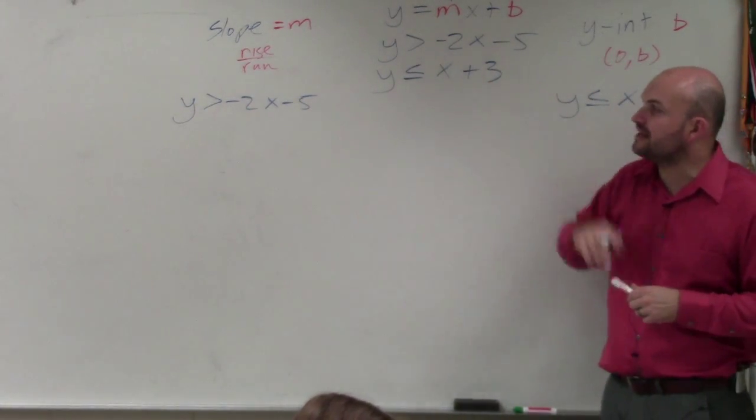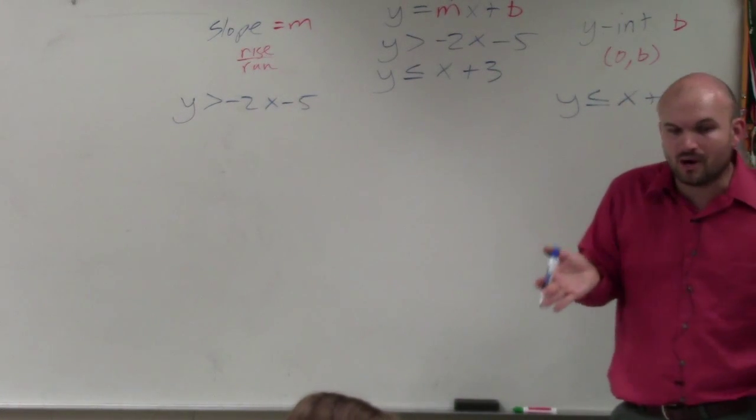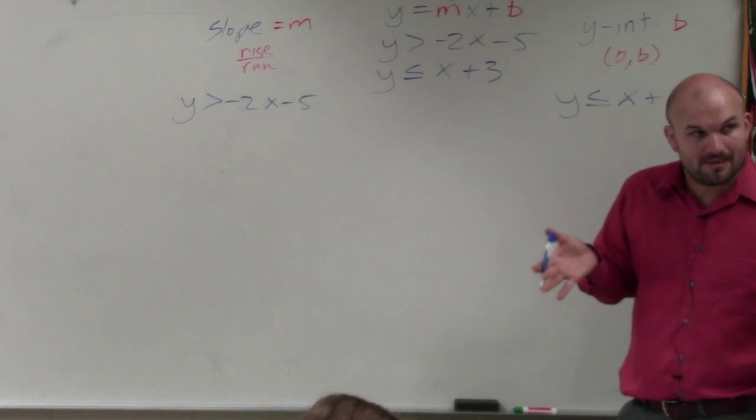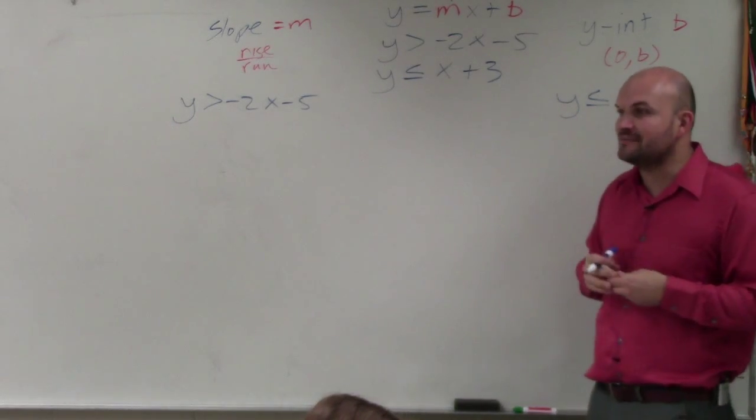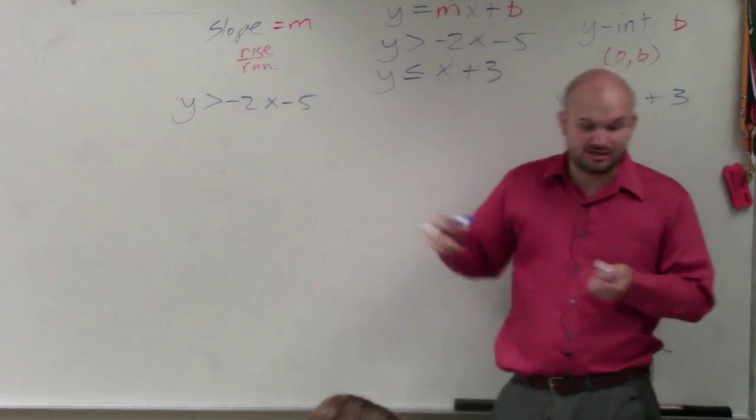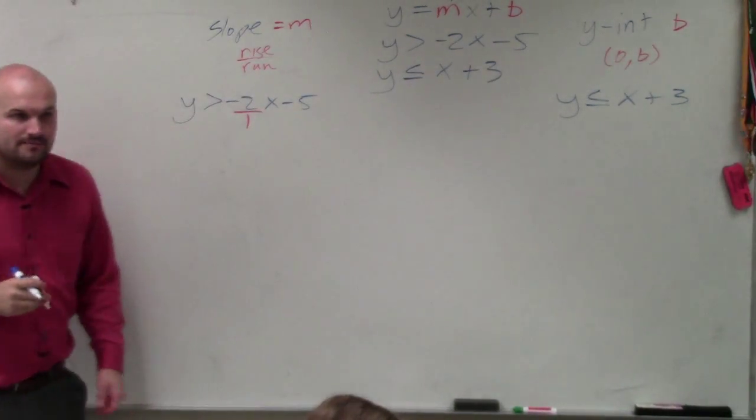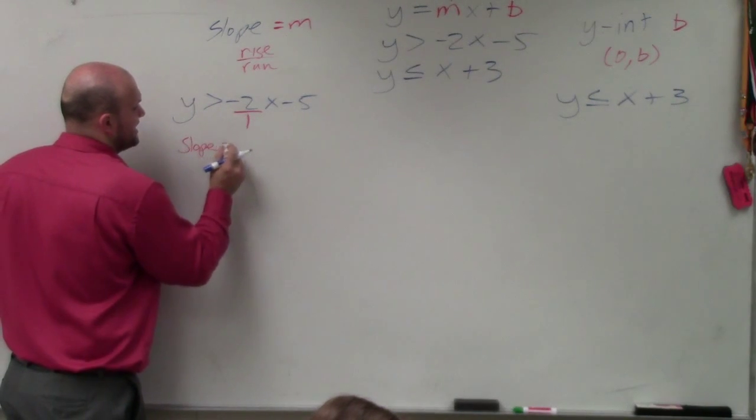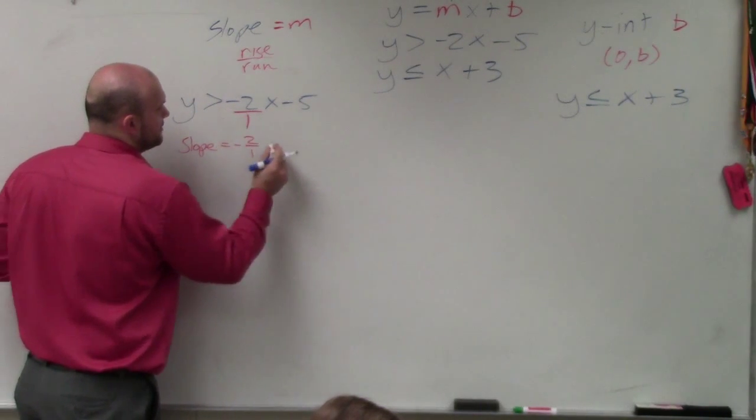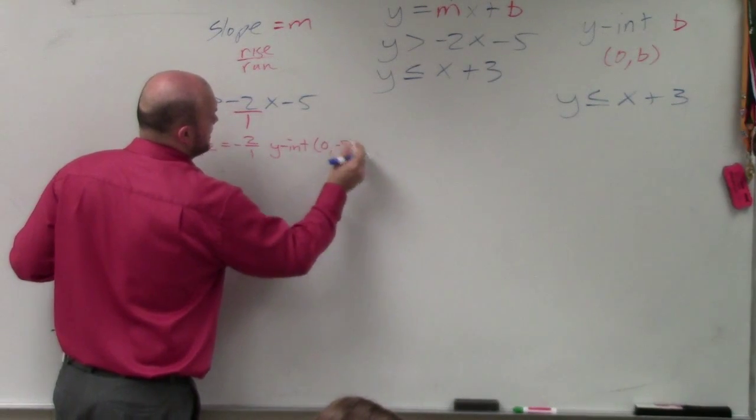So all we're simply going to do is identify what the slope is. Once you solve for y and you have y by itself, then you can identify the slope and the y intercept. Now in this equation, you can see my slope is not a fraction. So to create a fraction, I'm going to rewrite it over 1. So my slope, in this case, is negative 2 over 1. And my y intercept is 0, negative 5.